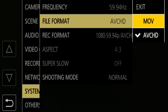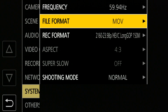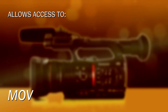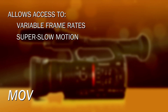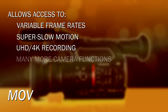Generally, I would say go to the MOV format. That's where the fun is — that's where you get the variable frame rates, super slow motion recording, and ultra high definition recording, all in the MOV file format.